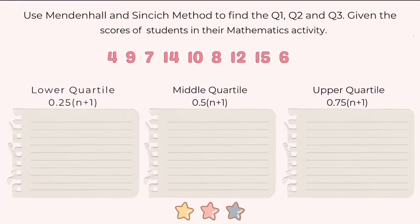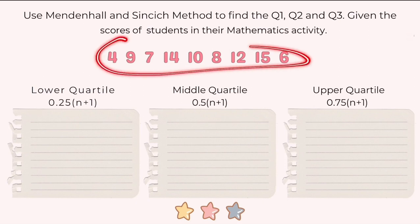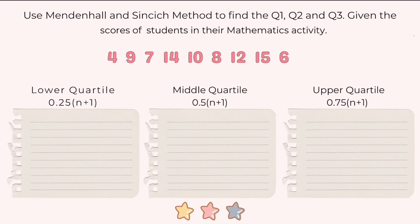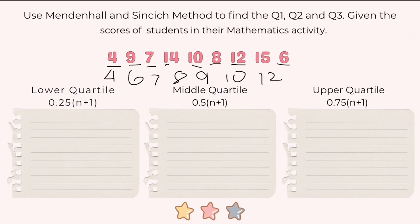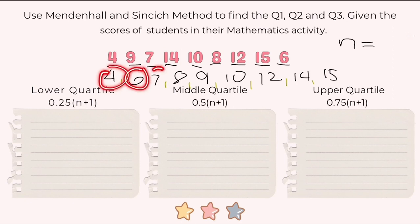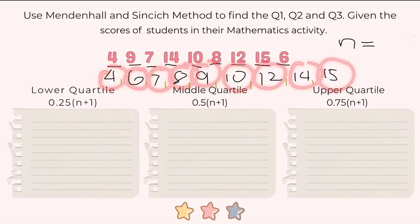Another example: use the Mendenhall and Sankich method to find Q1, Q2, and Q3 from students' mathematics activity scores. First arrange the numbers in numerical order: 4, 6, 7, 8, 9, 10, 12, 14, 15. Now count to determine N — there are 9 numbers, so N equals 9.